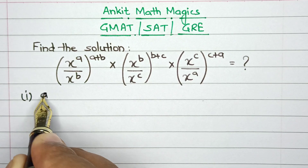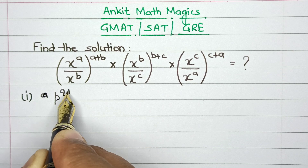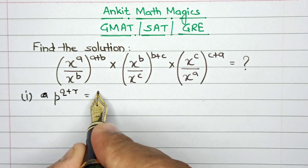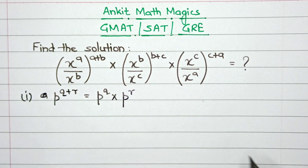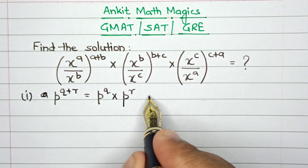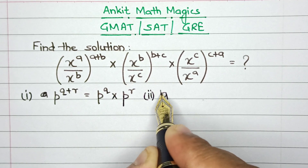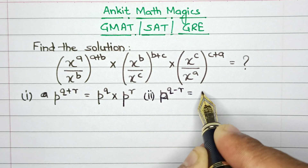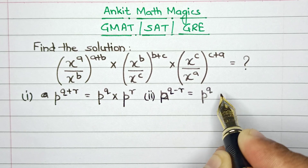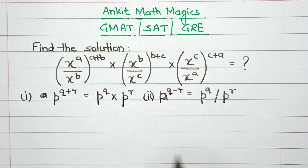The very first property is that if we have P raised to the power of Q plus R, then this can be written as P raised to the power Q divided by P raised to the power R. The second property is that if we have a number P raised to the power of Q minus R, then this can be written as P raised to the power Q divided by P raised to the power R.